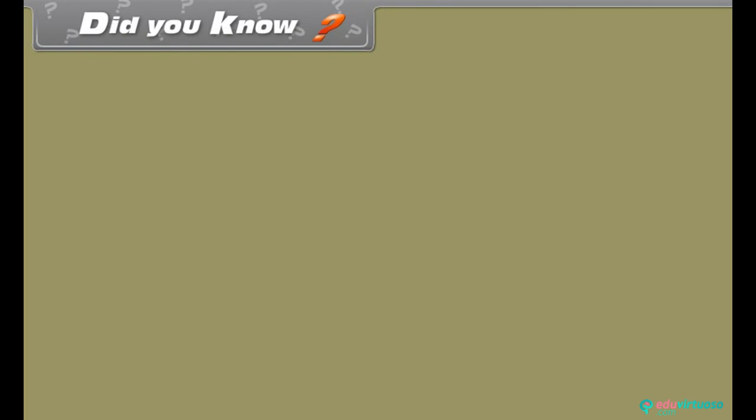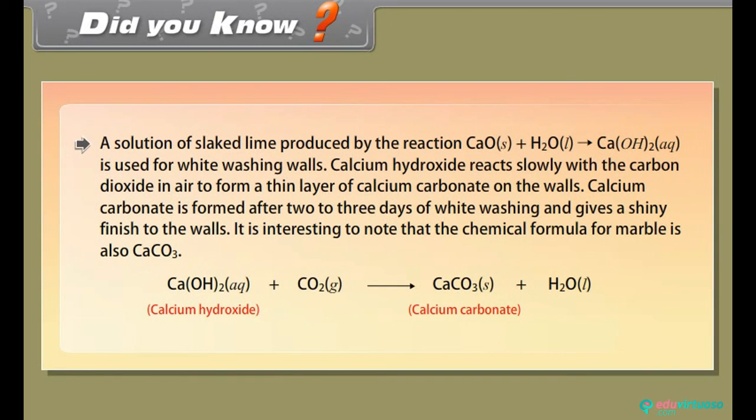Did you know? A solution of slaked lime produced by the reaction Ca(OH)2 plus H2O arrow Ca(OH)2 is used for whitewashing walls. Calcium hydroxide reacts slowly with the carbon dioxide in air to form a thin layer of calcium carbonate on the walls. Calcium carbonate is formed after two to three days of whitewashing and gives a shiny finish to the walls. It is interesting to note that the chemical formula for marble is also CaCO3.